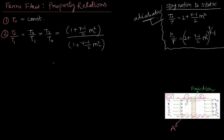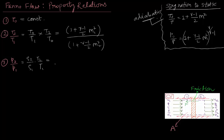Next, we will consider static pressure ratio P2 by P1. From the equation of state, P equals rho RT, so P2 by P1 becomes (rho 2 by rho 1) times (T2 by T1). From the equation of continuity, rho 1 U1 equals rho 2 U2, and hence rho 2 by rho 1 becomes U1 by U2. We multiply and divide by A1 and A2, noting that U by A is Mach number.